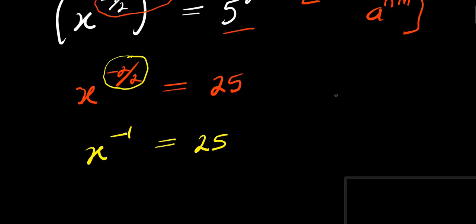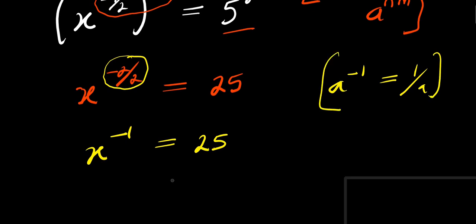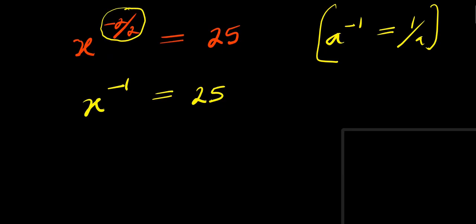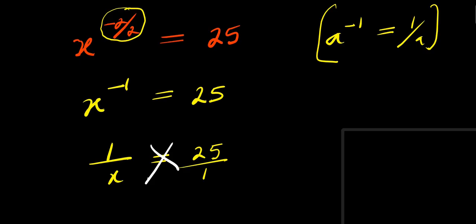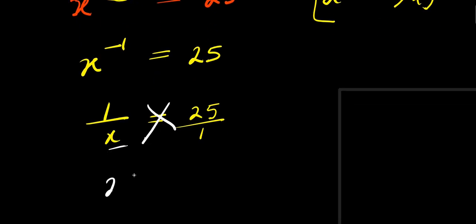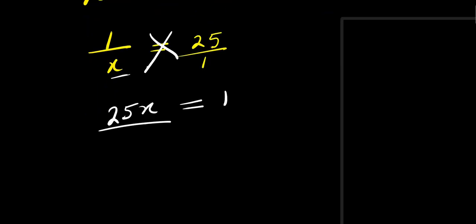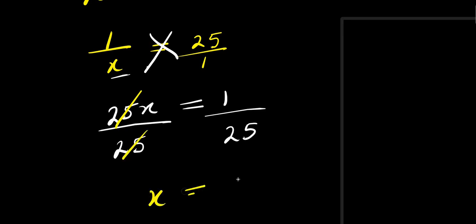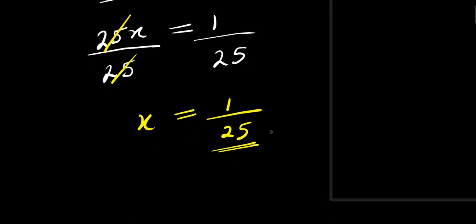So x to the power of negative 1 equals 25. Using the identity that a to the power of negative 1 equals 1 over a, we have 1 over x equals 25, or 1/x equals 25/1. Cross multiplying, 25x equals 1. Dividing both sides by 25, we get x equals 1 over 25.